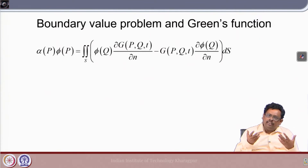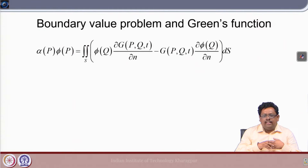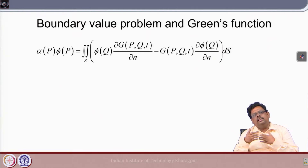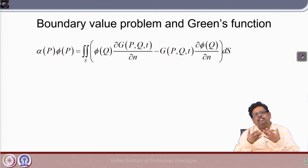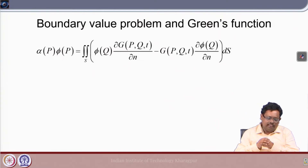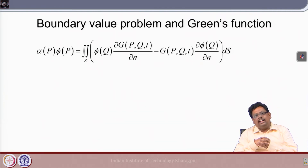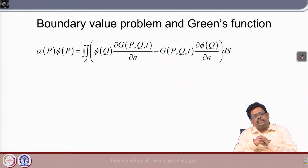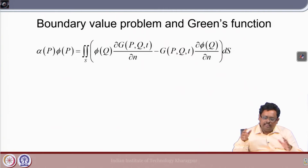However, there are other methodologies where instead of 1/R they take 1/R plus some other functions, and we are going to discuss all these things in future. That is why instead of 1/R I am writing a general function G. This integral equation is: α(P)·φ(P) = integral over surface S of φ(Q)·∂G/∂n(P,Q) etc.